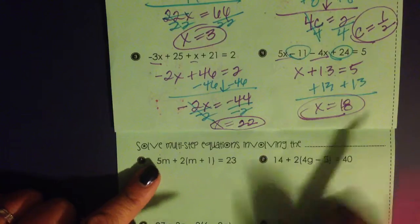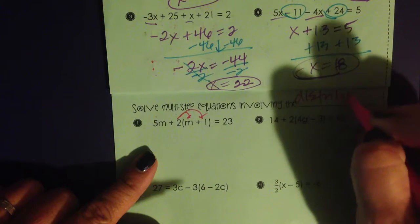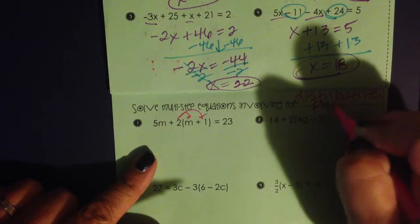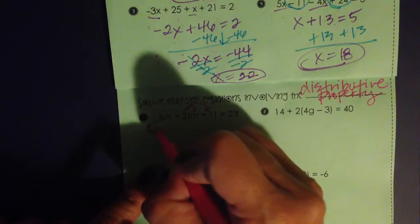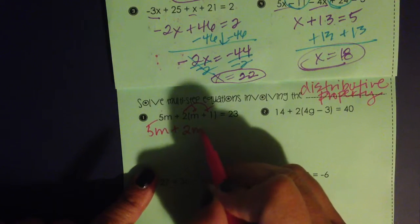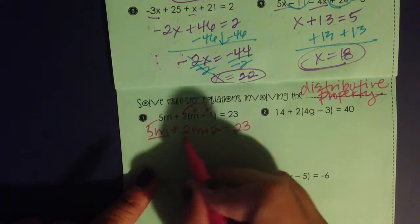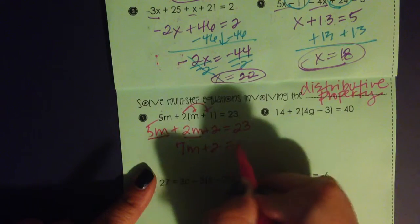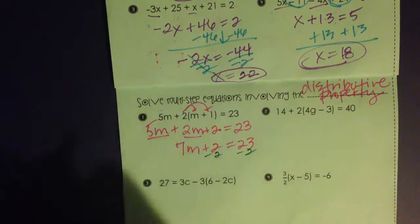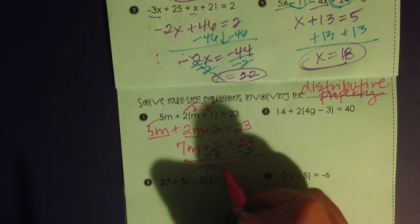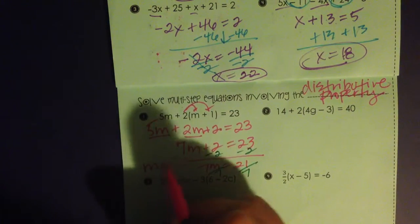Solve multi-step equations involving the distributive property. I've been practicing this since middle school, throughout geometry even. So what I'm going to do is just rewrite 5m plus 2 times m plus 2 times 1 and have that equal to 23. I'm going to combine like terms, my 5m and my 2m, 7m plus 2 equals 23. So I'm distributing, combining like terms to simplify, and then I start undoing. 7m equals 21. If I divide both sides by 7, m equals 3.